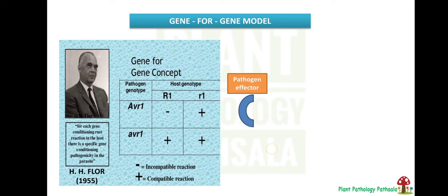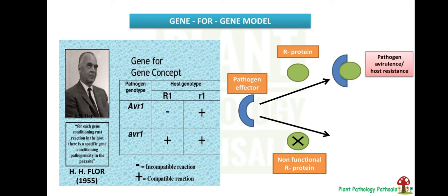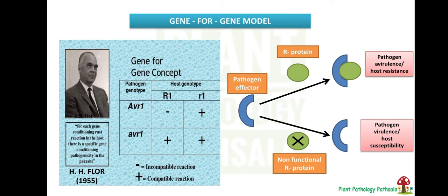Consider the pathogen effector — two cases are possible. If a functional R gene is present in the plant, it will perceive the pathogen effector and activate the immune system, making the plant resistant and preventing disease. Whereas when the functional R gene is absent in the plant, the pathogen effector will not be recognized, triggering susceptibility and effector triggered susceptibility.